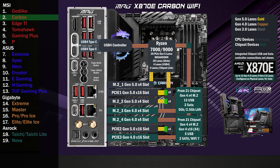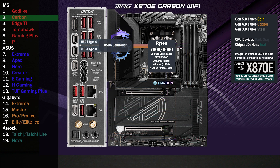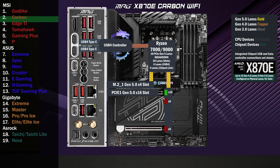Here's the PCIe connections for the MSI X870E Carbon Wi-Fi. The first four lanes go to the USB 4 controller, connecting two Type-C ports on the back. Four lanes at Gen 5 go to the main M.2. Sixteen lanes go to a PCIe switch. If only the first x16 slot is used, all sixteen lanes go to that slot. If either the second M.2 or x16 slot are used, the switch is activated, sending eight lanes to the first x16 slot, four lanes to the second M.2, and four more to the x16 slot below — all running at Gen 5.